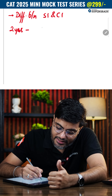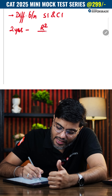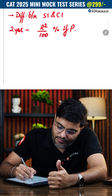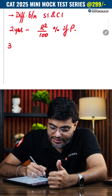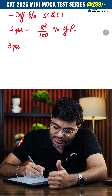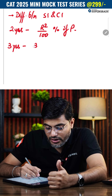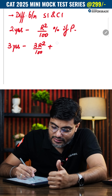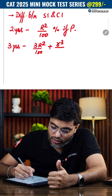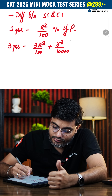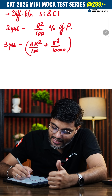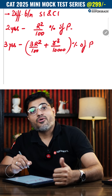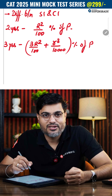And if the relationship is given for three years, then you can directly use 3r² by 100 plus r³ upon 10,000, whole percent of principal. Go ahead, use this and solve questions.